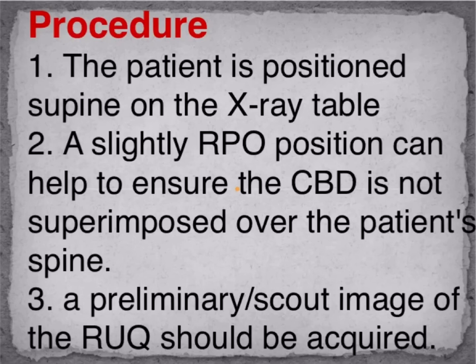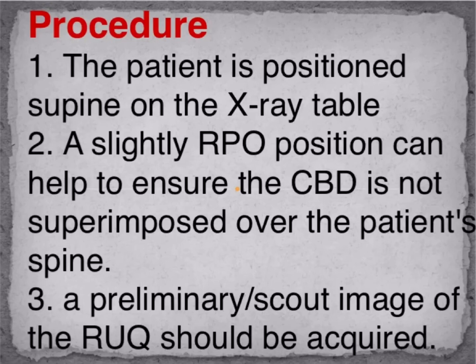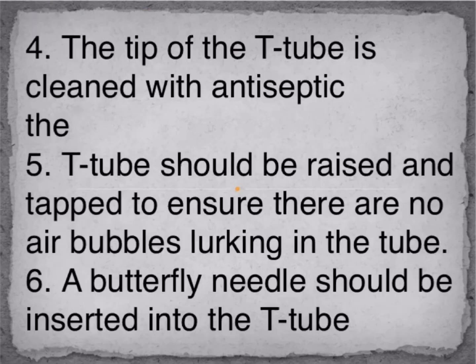Procedure: 1. The patient is positioned supine on the x-ray table. 2. A slightly RPO position can help to ensure the CBD is not superimposed over the patient's spine. 3. A preliminary scout image of the RUQ should be acquired. 4. The tip of the T-tube is cleaned with antiseptic. 5. The T-tube should be raised and tapped to ensure there are no air bubbles lurking in the tube.